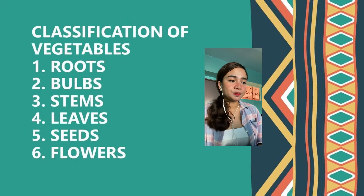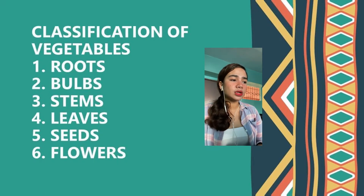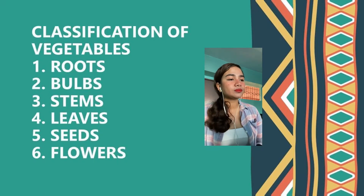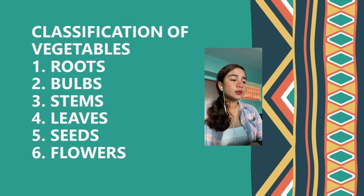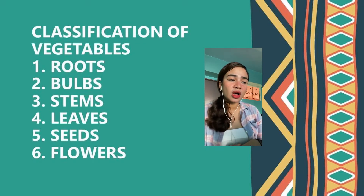First, we have roots. Examples of roots are carrots, beets, turnips, and radishes. Second, we have bulbs. Examples of bulbs are onions, leek, spring onions, and garlic.